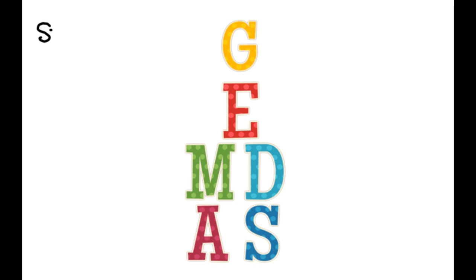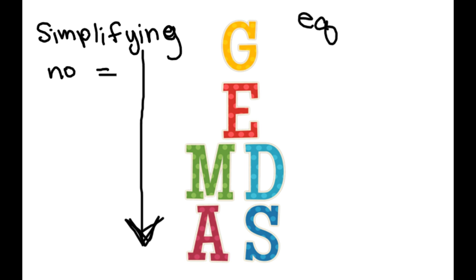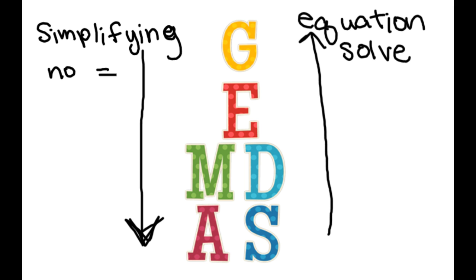When you are simplifying an expression — an expression means no equal sign — you are going to use GEMDAS, which is what we've been practicing with order of operations. But when you have an equal sign, it's an equation, and when you are solving an equation for a variable, you go backwards. You undo the addition and subtraction, then the multiplication and division, then the exponent, then the grouping symbols, and you have an answer. Whenever you're getting confused on what your next step is, just think of GEMDAS on your paper and do it backwards.